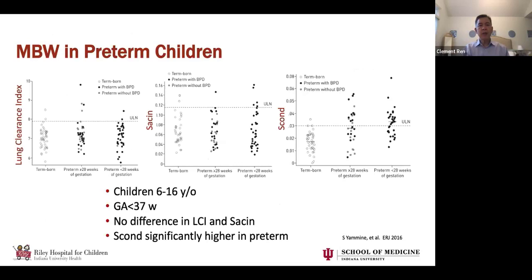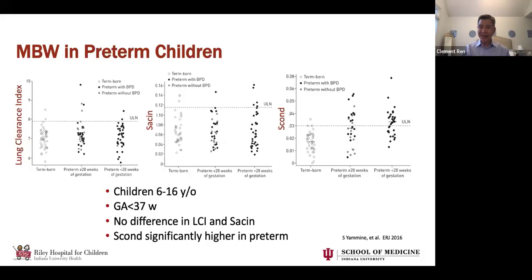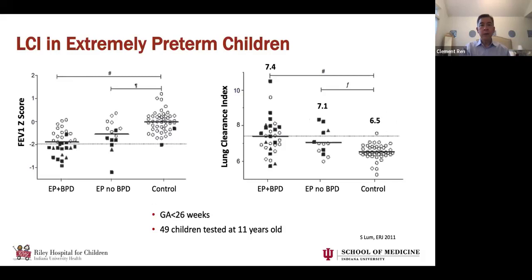What about preterm children? In preterm children it doesn't seem to be as marked an abnormality in MBW. A study of children 6 to 16 years of age — any preterm child, a broad range — showed really no significant difference in LCI. S-acin was similar across all groups. S-cond was a little bit higher in the preterm infants, though not markedly, suggesting there might be some mild conducting airway abnormalities detected by MBW.